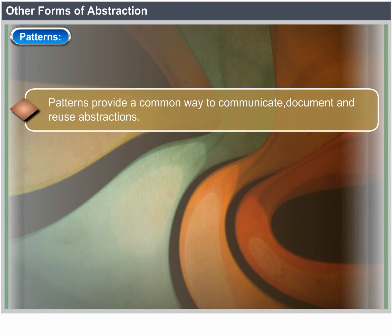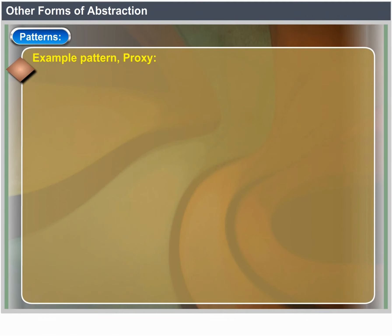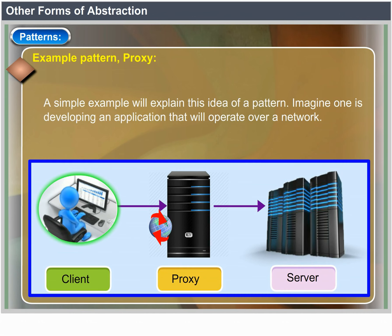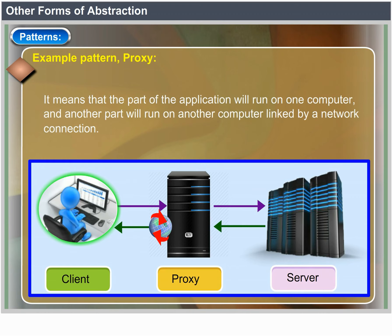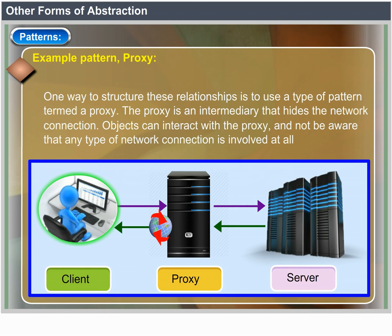Patterns provide a common way to communicate, document, and reuse abstractions. Patterns depict a useful relationship between objects and help find solutions to new problems. For example, the Proxy pattern: imagine developing an application that operates over a network, where part of the application runs on one computer and another part runs on another computer linked by a network connection. Creating the actual connection and transmitting information are details not relevant to a large portion of the application. One way to structure this is to use a proxy — an intermediary that hides the network connection — so objects can interact with the proxy without being aware that any network connection is involved.